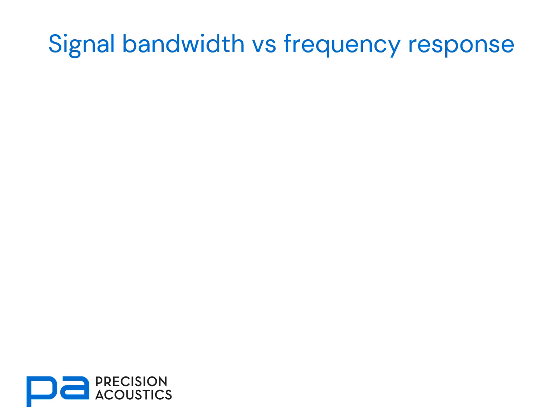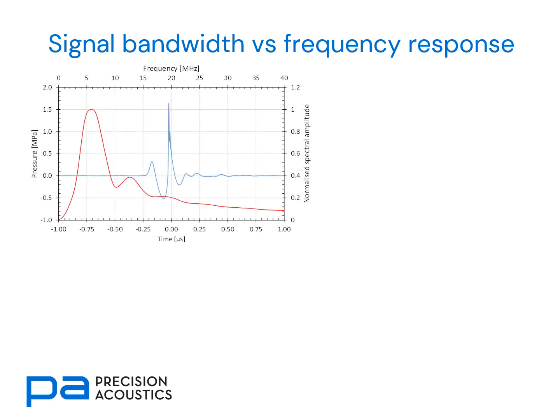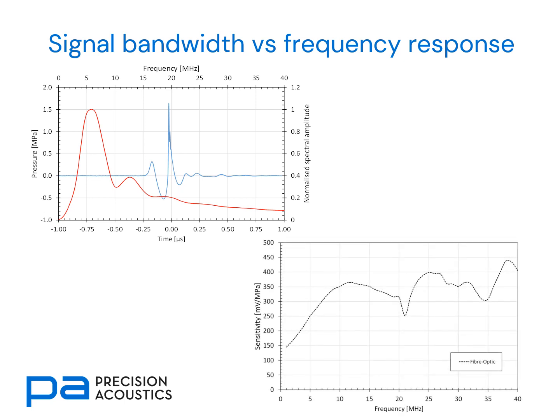Whilst we're talking about frequency response, it's important to consider how that should be compared with the bandwidth of the signals we're looking to measure. Consider the graph here, which shows in blue the time signature and in red the spectral representation of a typical diagnostic ultrasound waveform. Were we to measure that with an optical fibre hydrophone, you can see there is substantial variation over the 40 MHz bandwidth. This is a very broadband source, and measuring it with a response that has substantial variation may introduce quite a lot of distortion in the shape of the waveform. We could correct for this with a deconvolution operation, but it's one more thing to correct for.